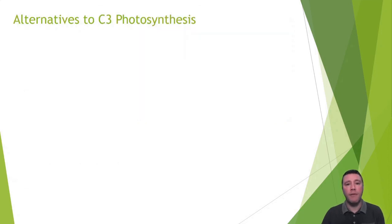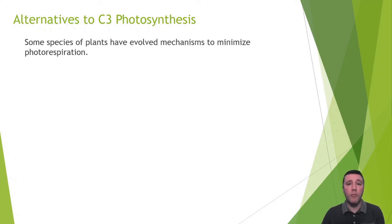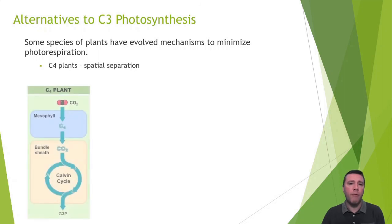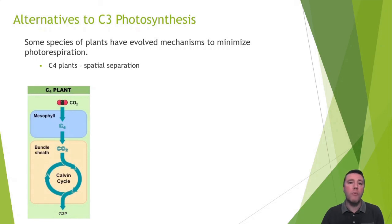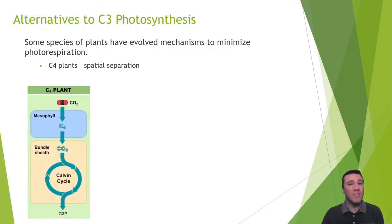Some species of plants have evolved mechanisms to minimize photorespiration. The first group are called C4 plants. A C4 plant functions by first fixing carbon dioxide to an organic acid rather than directly to RuBP. This initial carbon fixation takes place in a mesophyll cell. The organic acid, with carbon dioxide attached, is shipped off to a neighboring cell where the remainder of the Calvin cycle can take place. The movement of carbon dioxide from one cell to another effectively creates a concentration gradient, promoting the constant influx of carbon dioxide into the leaf and its cells. Because carbon fixation and the remainder of the Calvin cycle are occurring in two different cells, we say that C4 plants have a spatially separated Calvin cycle.